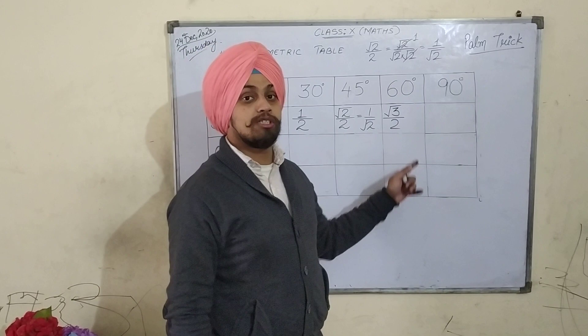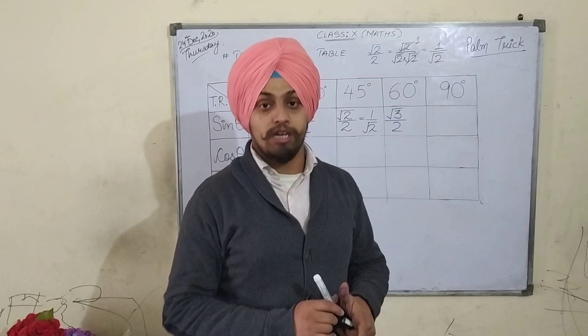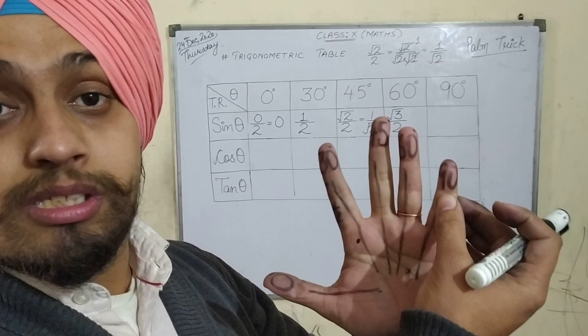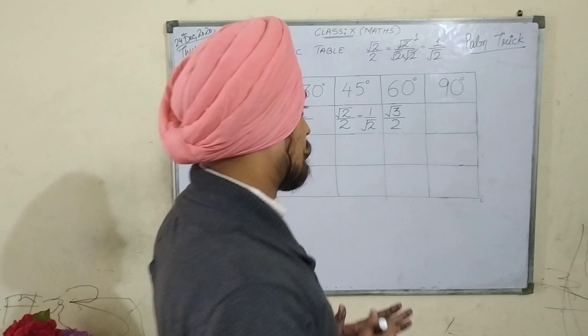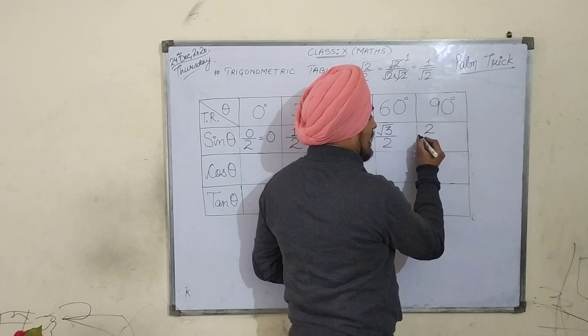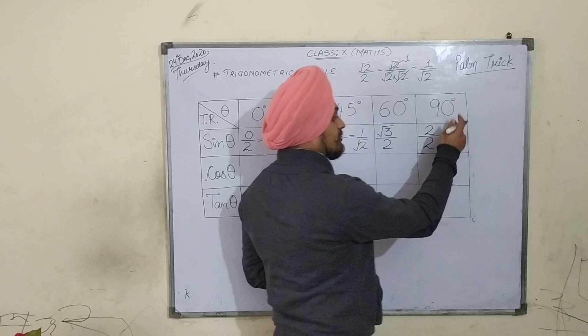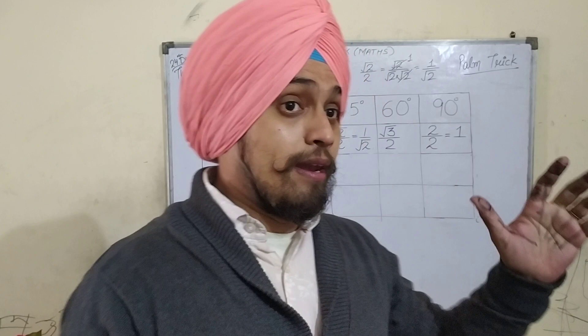Similarly we will find the value of sin 90 degree. 90 degree is written on this finger. I will bend this finger and see how many fingers are to the left of it — 4 fingers. So I will take the square root of 4. Square root of 4 is 2. And always divide it by 2. So 2 by 2, cancellation will take place, and the final answer will be 1. So the value of sin 90 degree is 1.